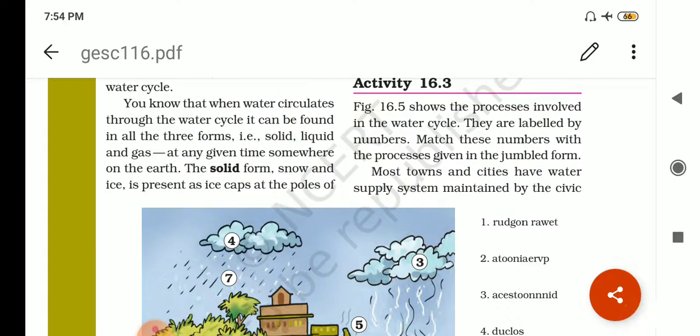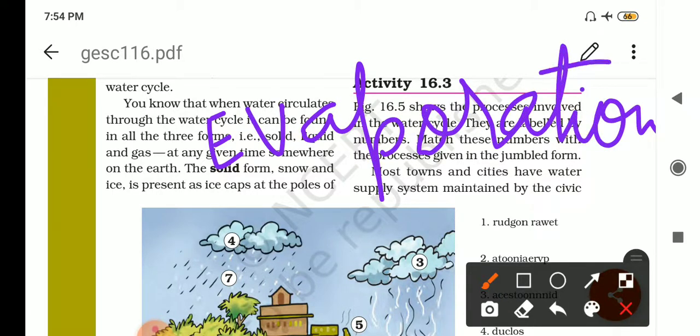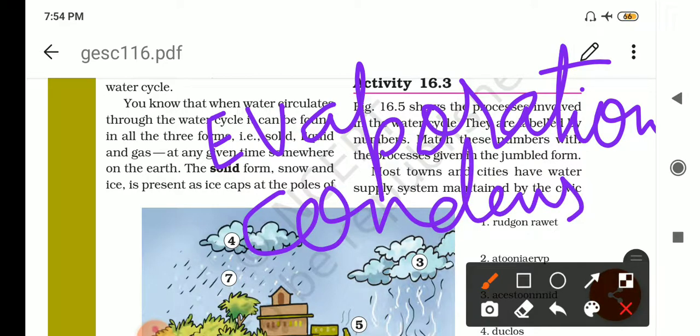Now we all know about the terms. Three terms are there. First is evaporation. Evaporation is the conversion of water into vapor. Second is called condensation. Condensation is the conversion of water vapors into liquid. Then water changes to water vapor at all temperatures. This is called evaporation.